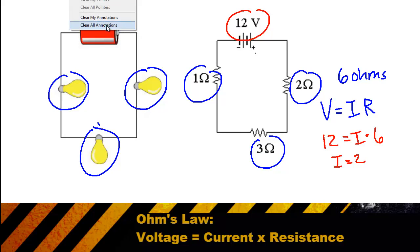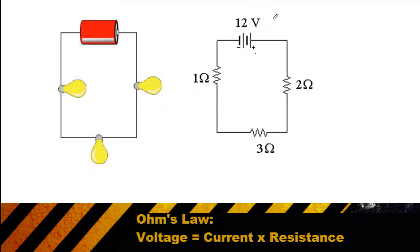Once we've identified the current as 2, we can start to figure out what's called the voltage drop at each resistor. Again, we're going to use our equation that voltage is equal to current times resistance. And from our last calculation, we found the current to be equal to 2. And remember that in a series circuit, the current stays the same throughout the circuit.